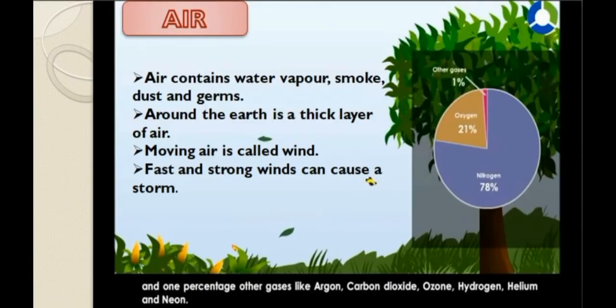Air is all around us and it contains water vapor, smoke, dust and germs. Around the earth there is a thick layer of air called the atmosphere. Moving air is called wind, and fast and strong winds can cause a storm.